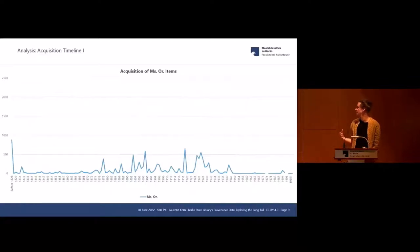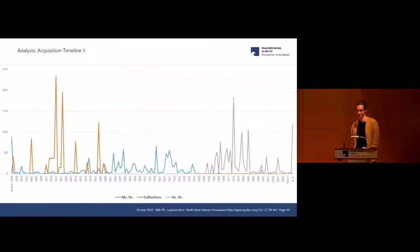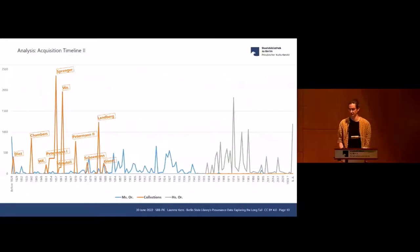Working with the data, I tried to do some bird's eye perspective calculations. This is an acquisition timeline for only the Ms.or. items. The horizontal dimension is the timeline and the vertical dimension is the number of items acquired in each year or recorded in the accession journals as acquired in the respective year. What you see here, very limited activity in the 19th century. But if we combine this with the data on collection shelf marks that use the collector's names, we can add the names to the peaks, and we still have the question what the blue peaks can tell us about the provenance.